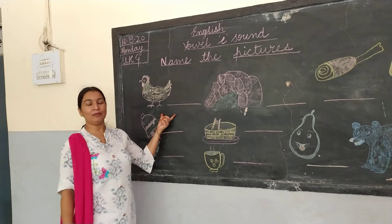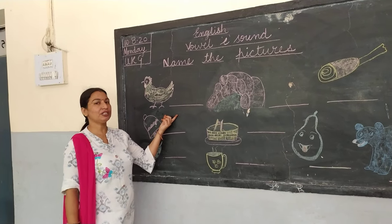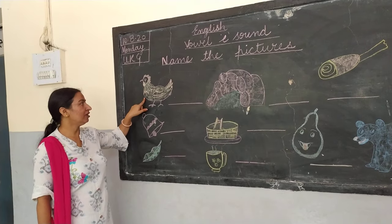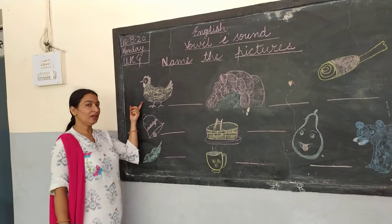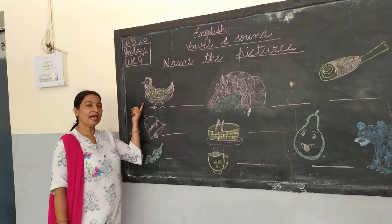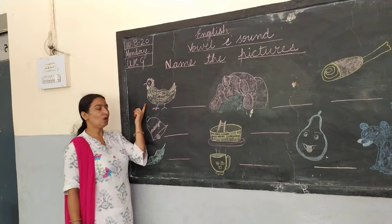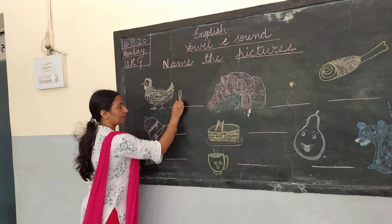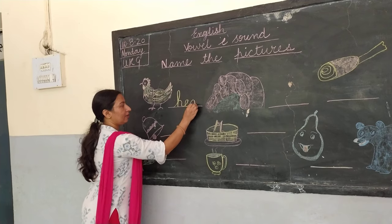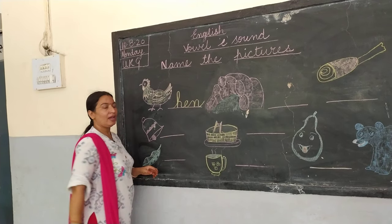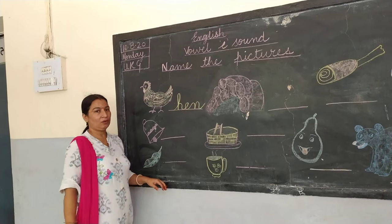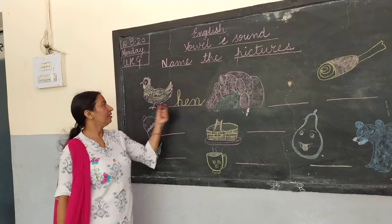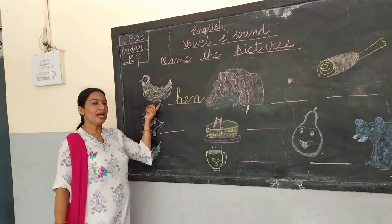See on the blackboard and watch it carefully. Now see the first picture — it is a picture of a hen. So what is the spelling of hen? H-E-N, hen. H-E-N, hen. This is the picture of hen.